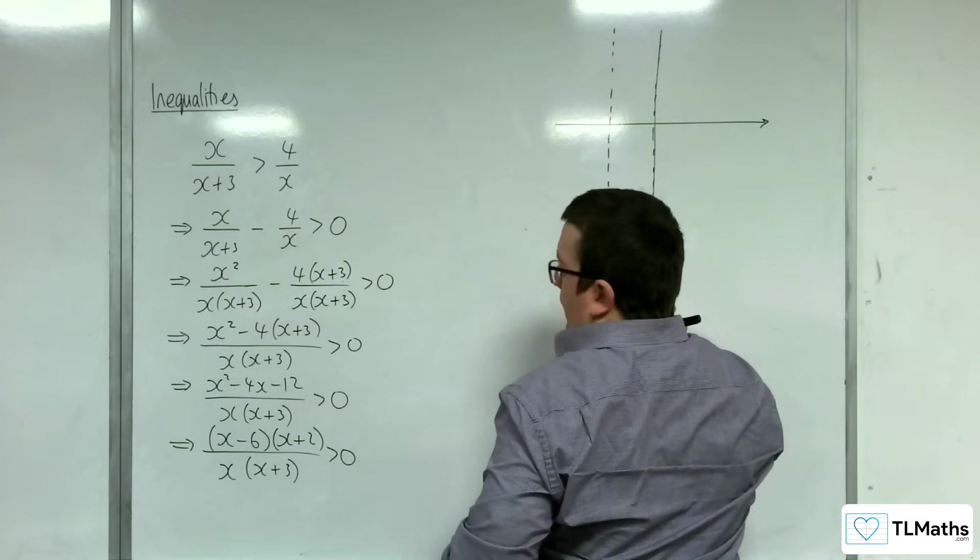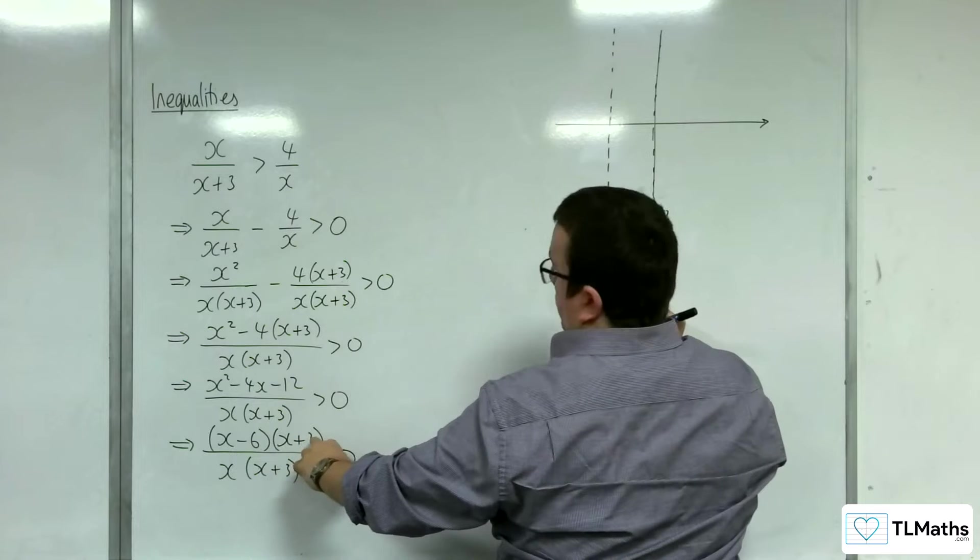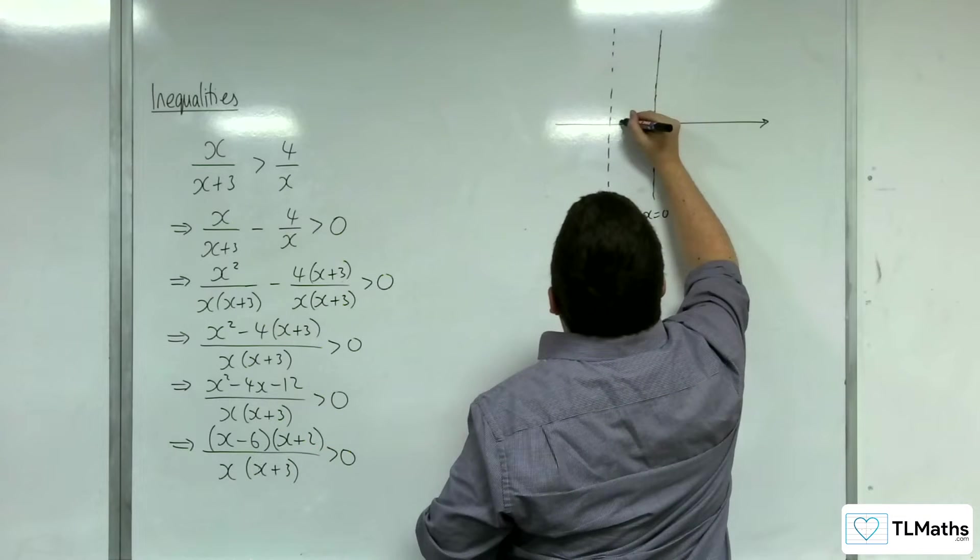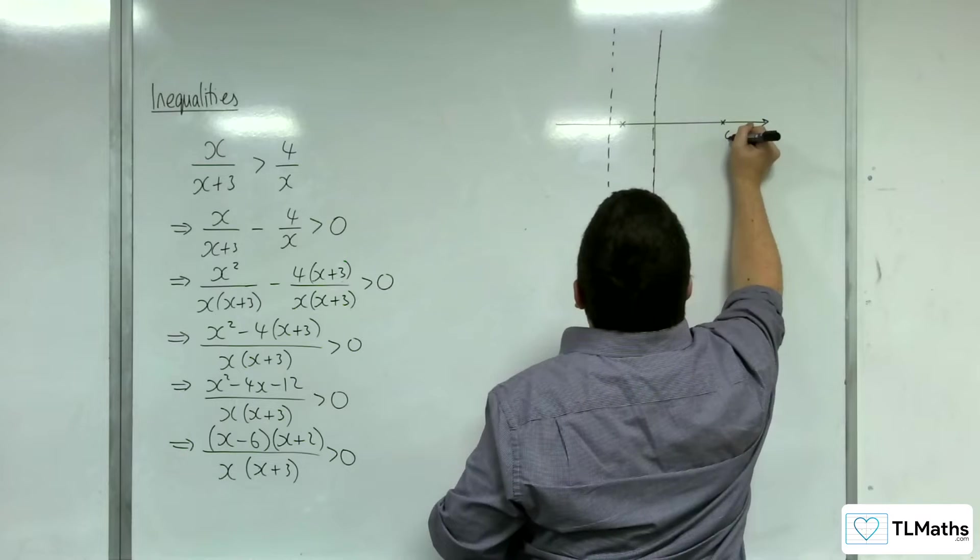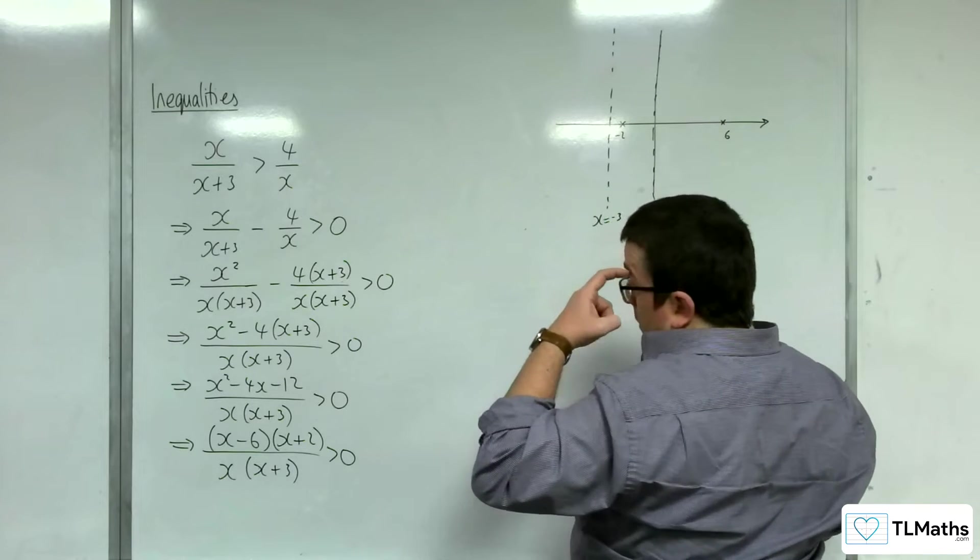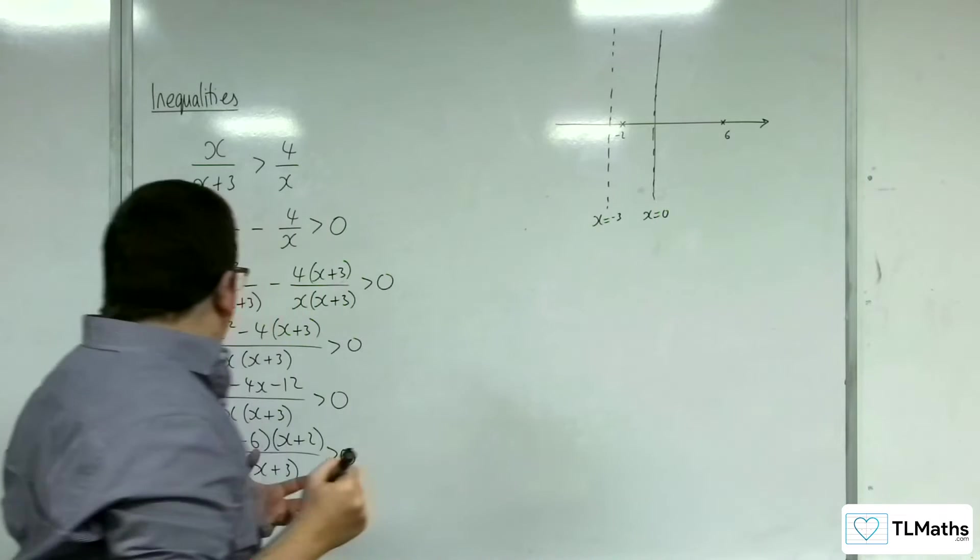And it's going to be crossing the x axis at 6 and minus 2. So minus 2 and 6. Okay, so that's so far what we know.